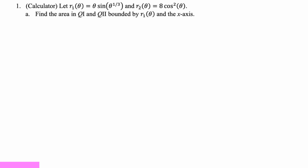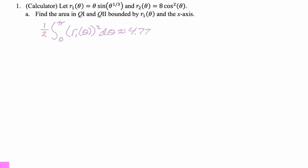From our calculator work, we're going to write down the definite integral because you have to write that — you can't just write a numerical value. So we write one-half times the integral from zero to pi of R1 squared d-theta, and then our calculator told us that was approximately 4.773.